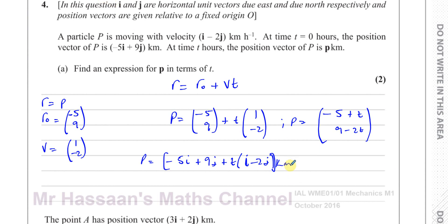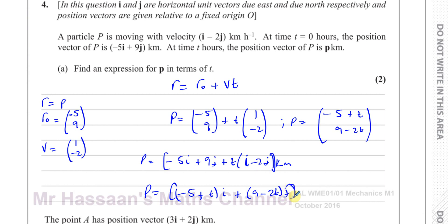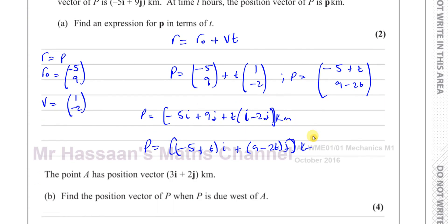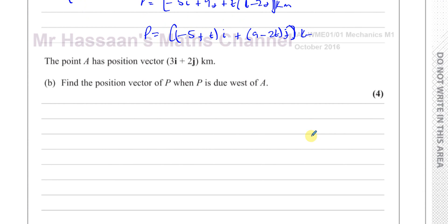To rewrite that clearly: p equals (minus 5 plus t)i plus (9 minus 2t)j kilometres. All of those are perfectly fine ways of writing the answer. Now, it says a point A has position vector 3i plus 2j. Find the position vector of P when P is due west of A.